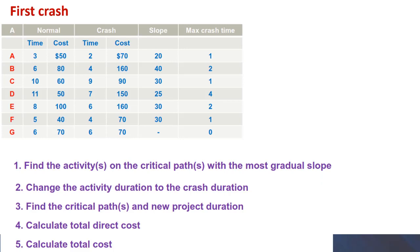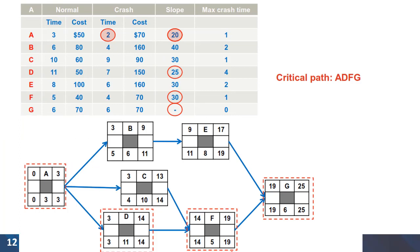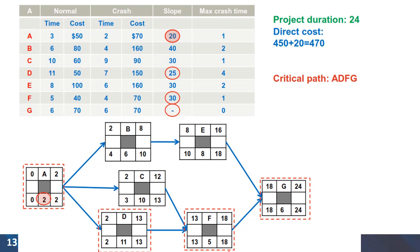So we need to follow different steps for project crashing. The first step is to choose between the activities on the critical path and the cheapest activity to crash in our case is activity A with the slope of 20. We can then add the additional cost of 20 to the previous cost of 450 and also redraw the project network and find a new critical path for the project.